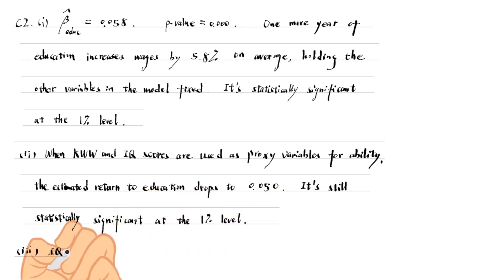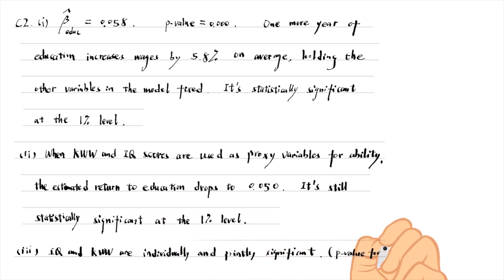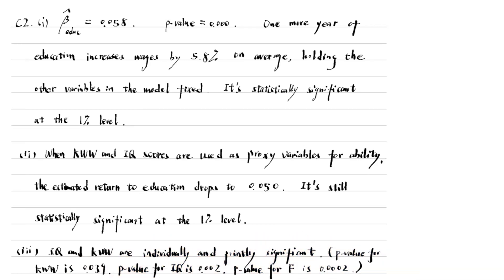For part 3, IQ and KWW are both individually and jointly significant. KWW is individually significant at the 5% level. IQ is individually significant at the 1% level. They are jointly significant at the 1% level.